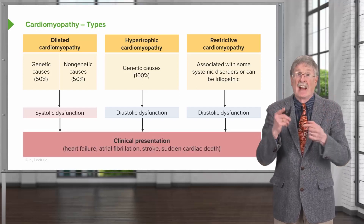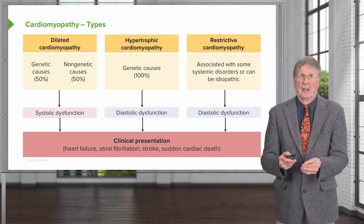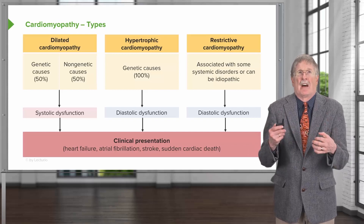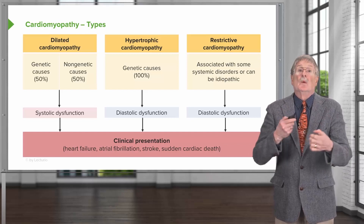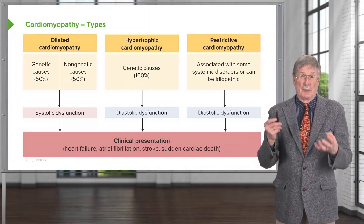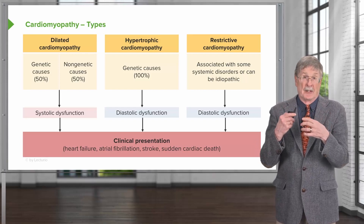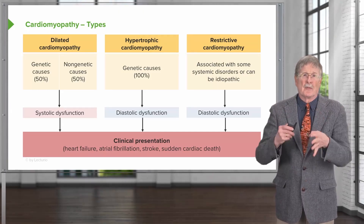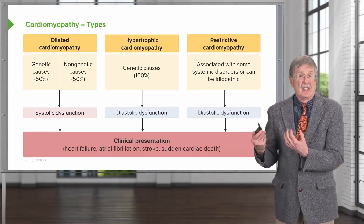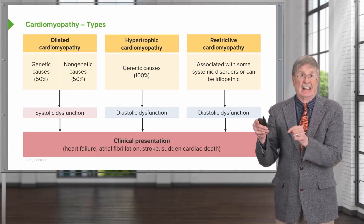In all cases — dilated, hypertrophic, or restrictive — the clinical presentations are pretty much the same: heart failure, with inadequate pump function to perfuse the rest of the body. As the heart dilates and valves fail, or as we have increased squeezing with poor relaxation, we get regurgitant flow into the atrium, left atrial enlargement, and atrial fibrillation. A quivering, dilated left atrium with diminished flow is prone to thrombus formation, so patients can present with stroke and sudden cardiac death due to embolization or arrhythmic events. The final consequences are similar across all forms; how we get there differs.